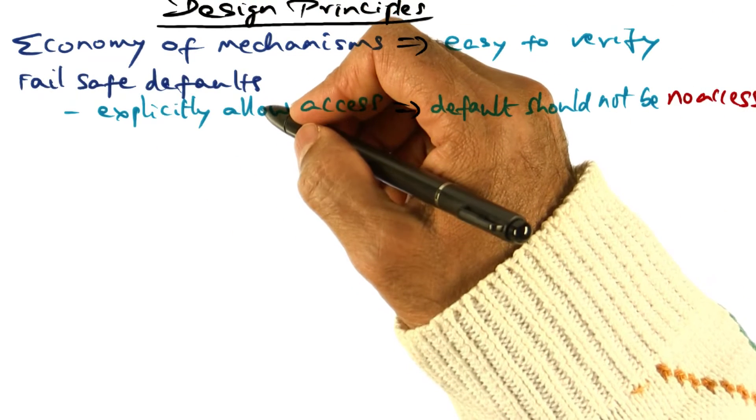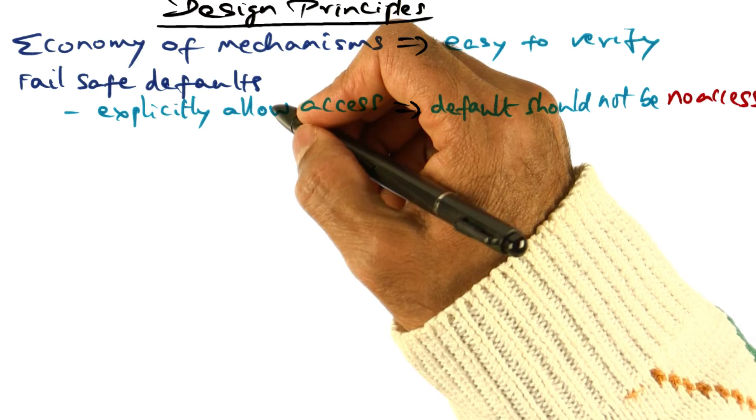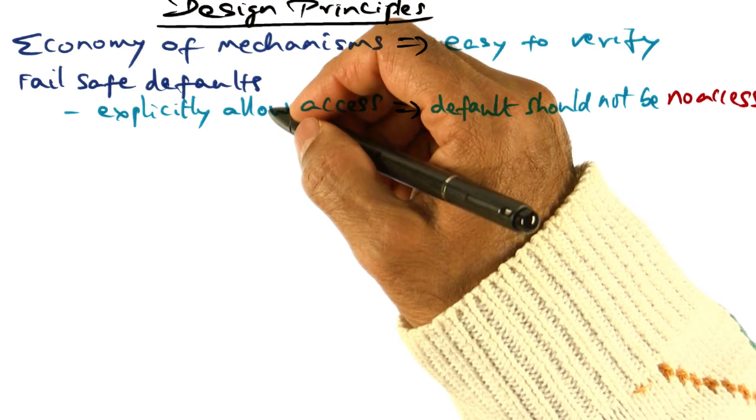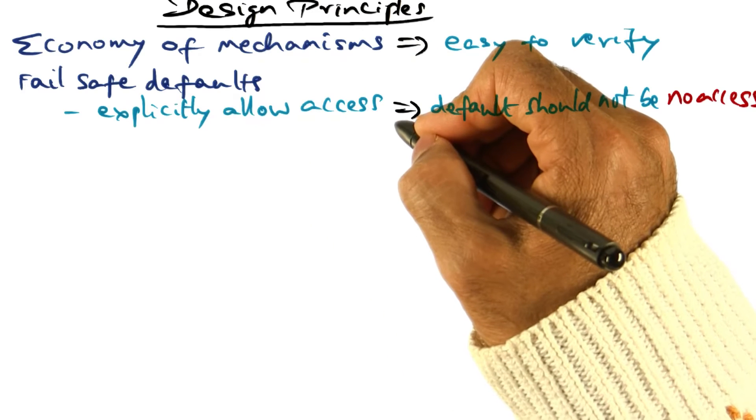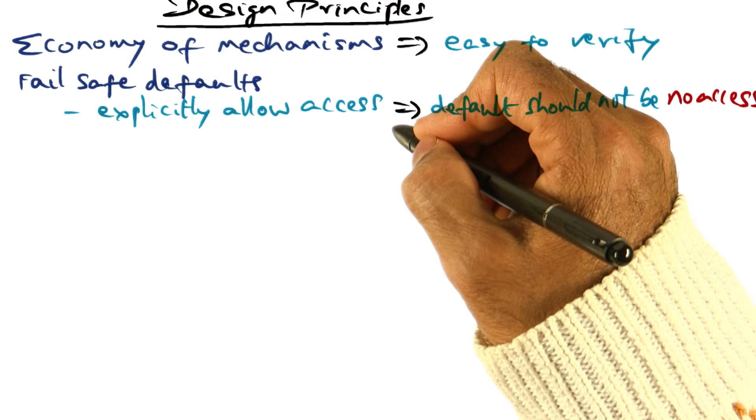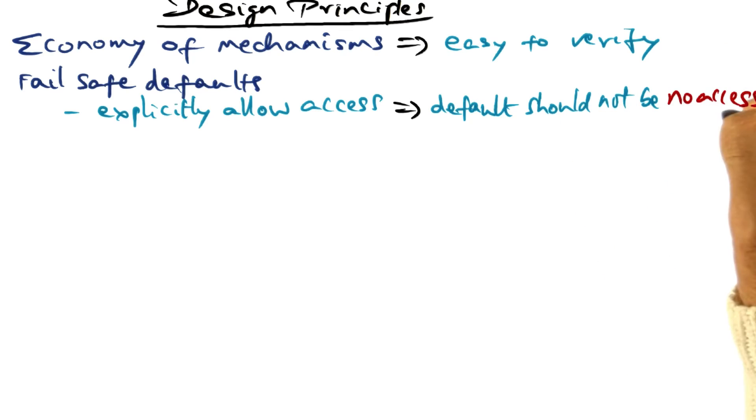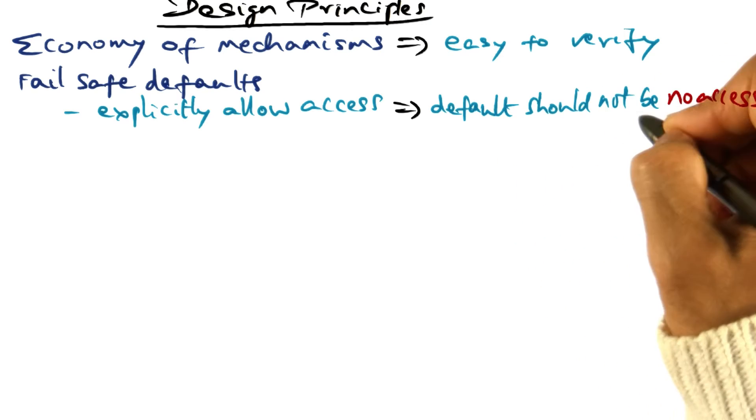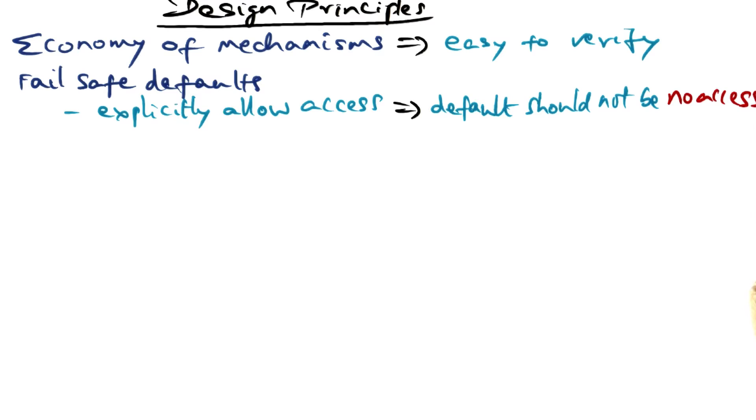The second principle is what he calls fail safe defaults. The idea is you want to explicitly allow access to the system or information. The default should not be no access, because if the default is no access, then there is no way to guarantee that information is protected. This is a negative statement again.